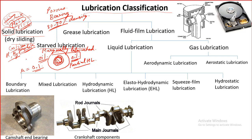Another example of starved lubrication is in-situ lubrication in polymers. Inside the polymer, liquid droplets are embedded that are compatible with the matrix so the bulk strength is not reduced. When sliding occurs, these liquid pockets open up and the surface receives the oil — which can be a base oil or a high-performance oil like PFPE, a high-temperature oil. This is another example of marginally lubricated sliding.